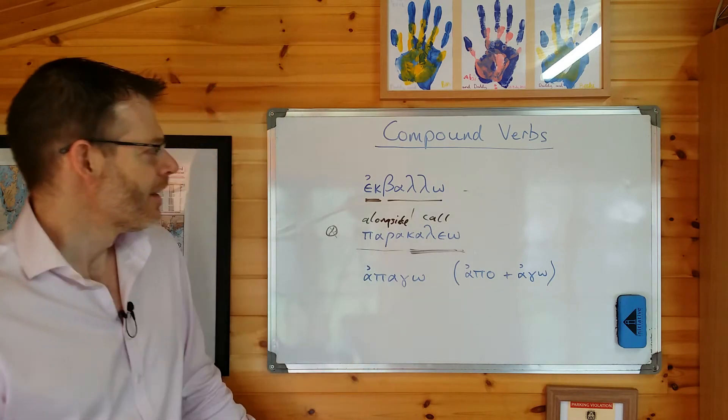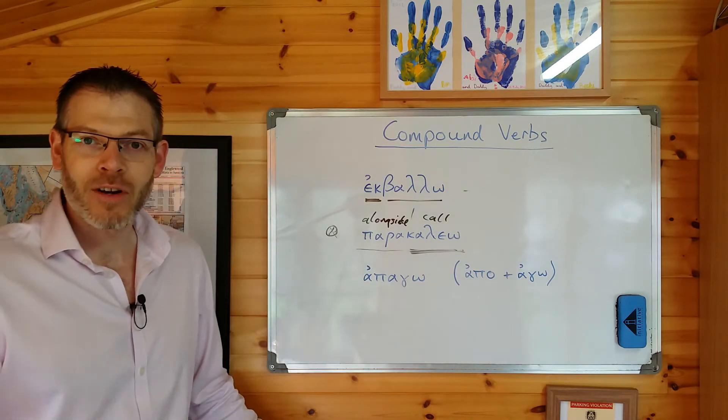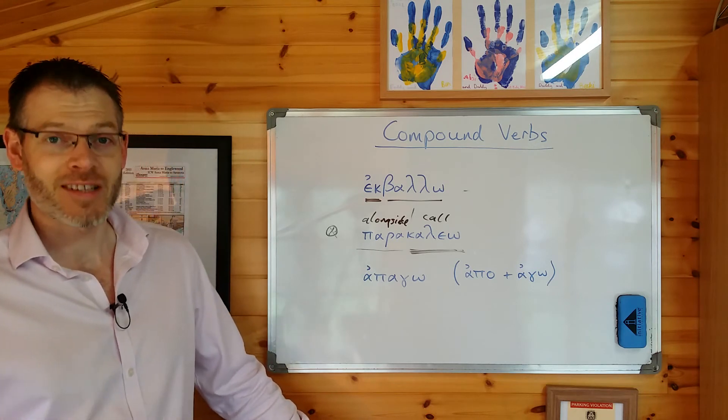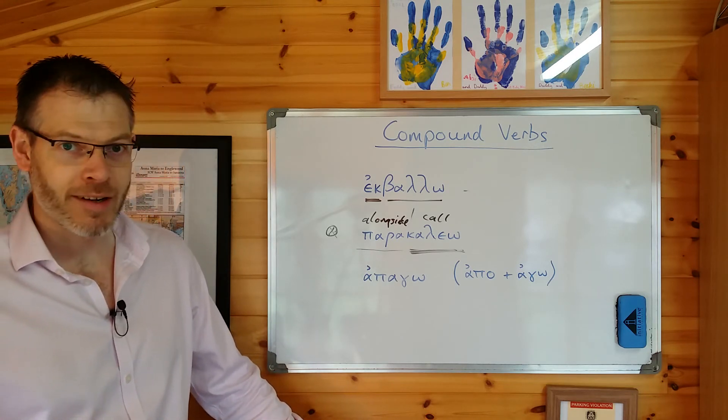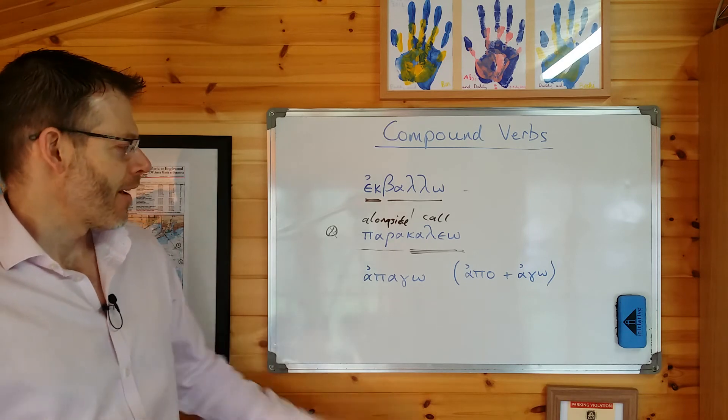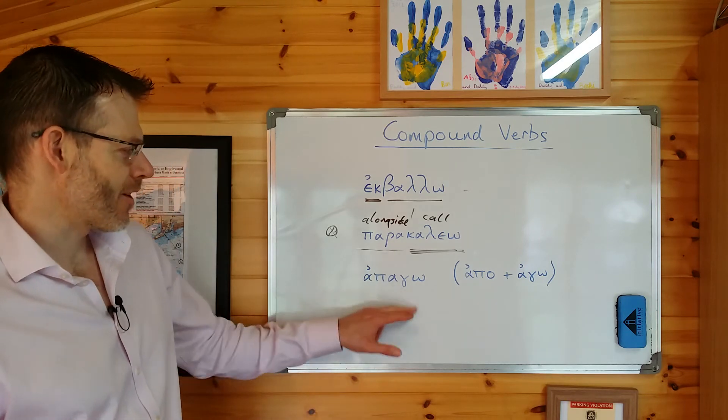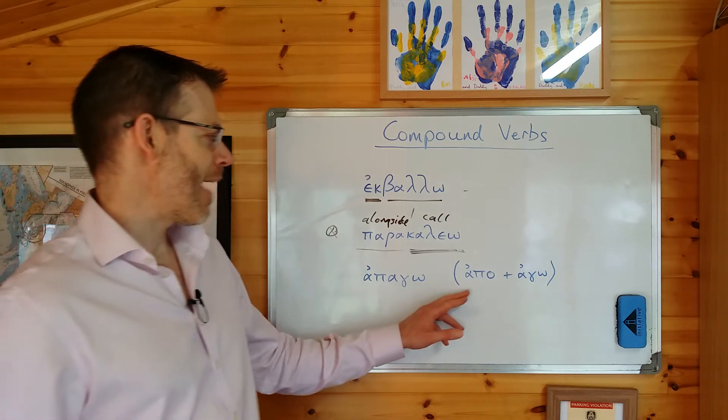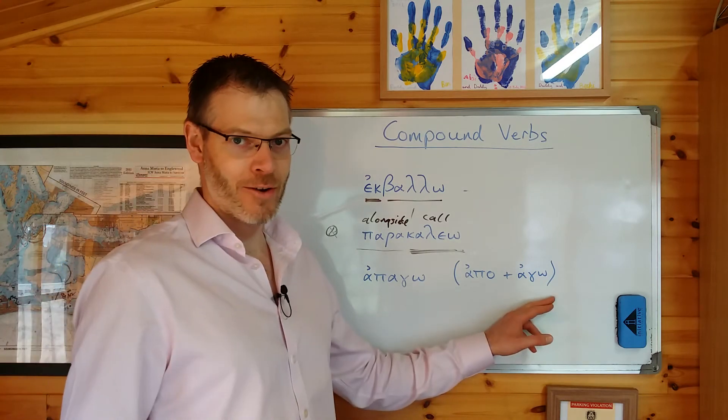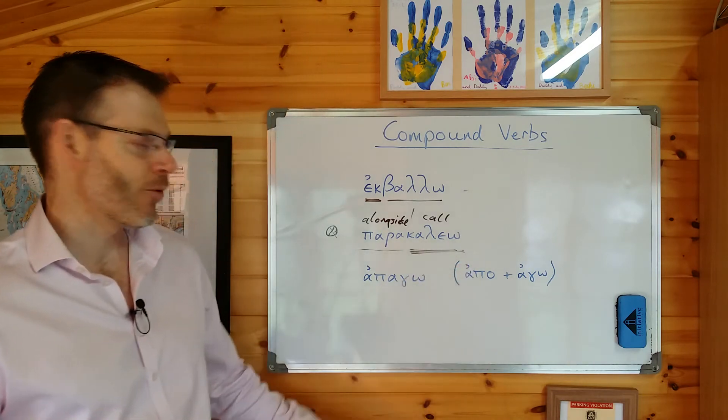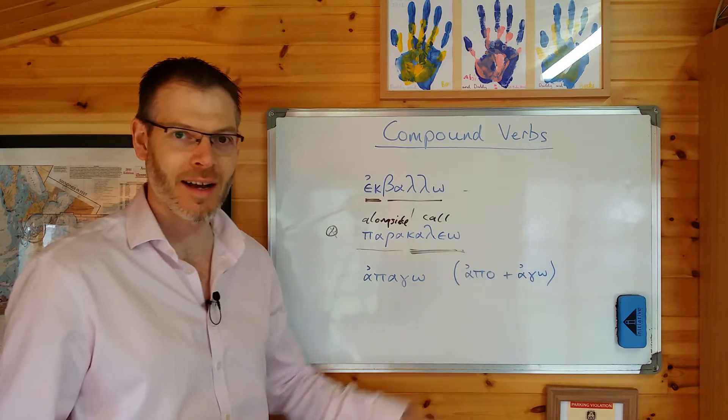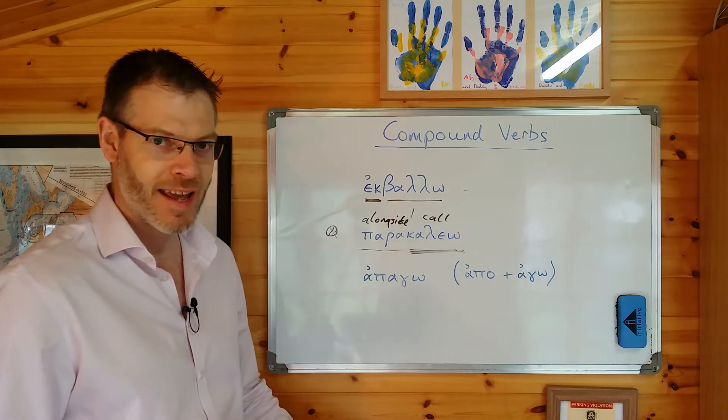Now one more final point about this. Here's an example of a compound verb in which we've got a phenomenon that we looked at previously when we were thinking about prepositions, the phenomenon of elision. Apago. Apago is a compound of apo and ago. Apo meaning from or away from, and ago meaning I lead or I bring.